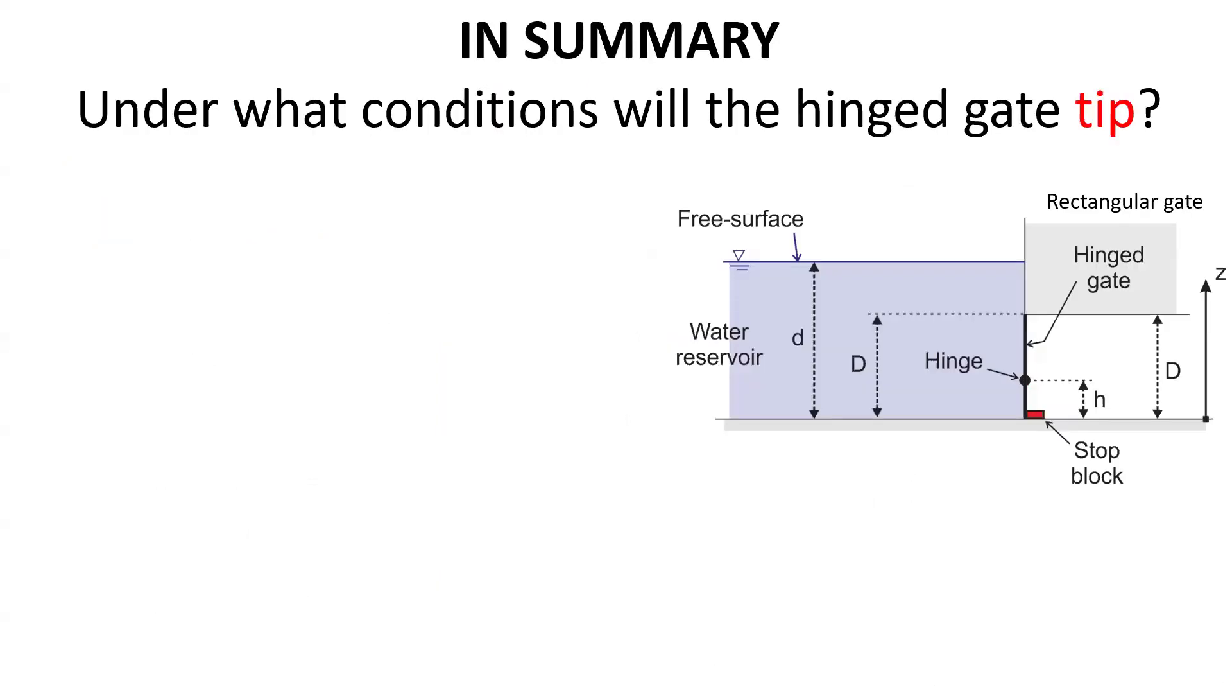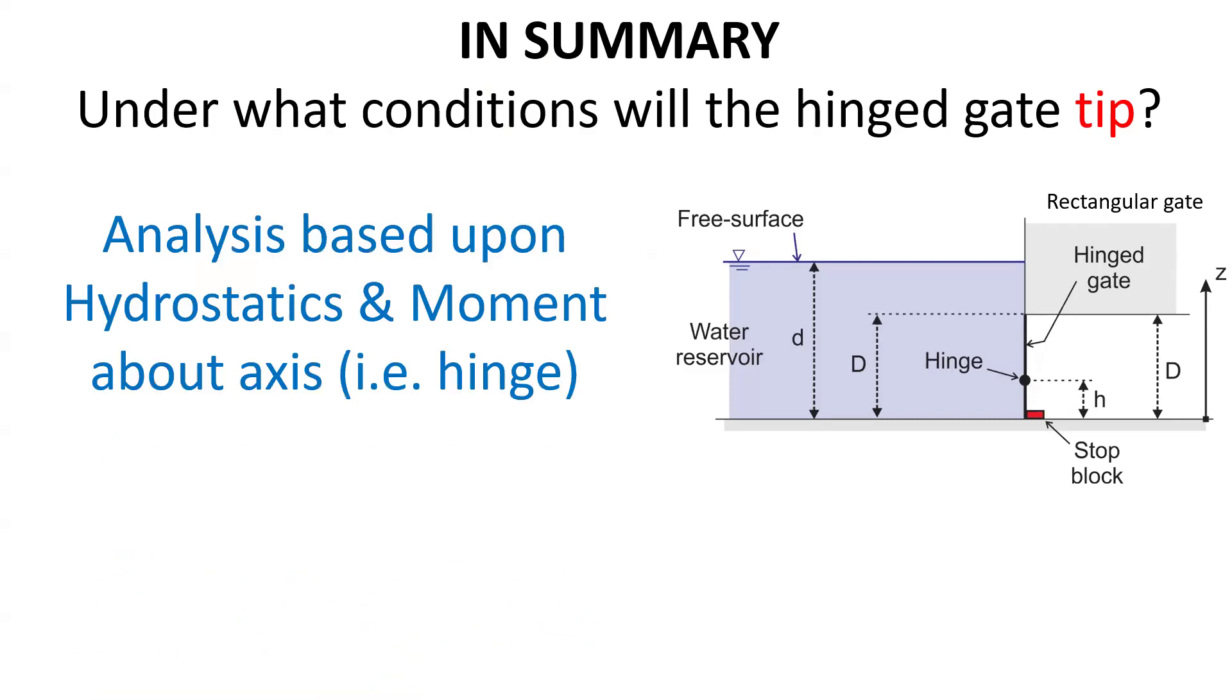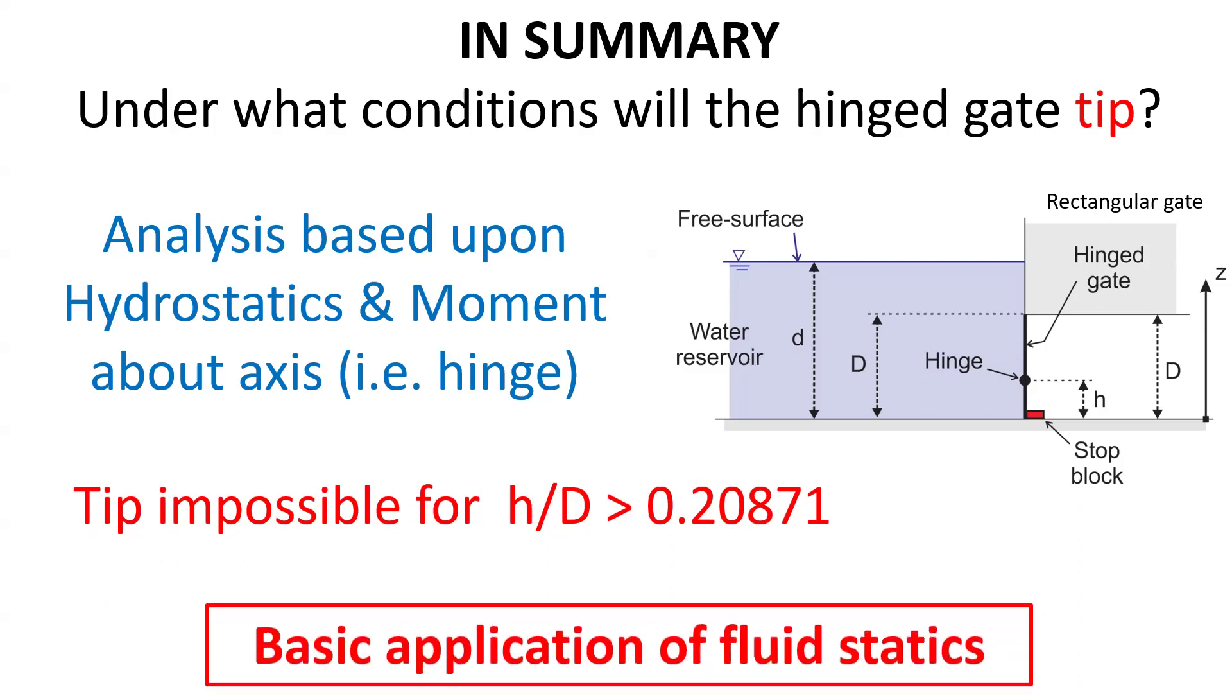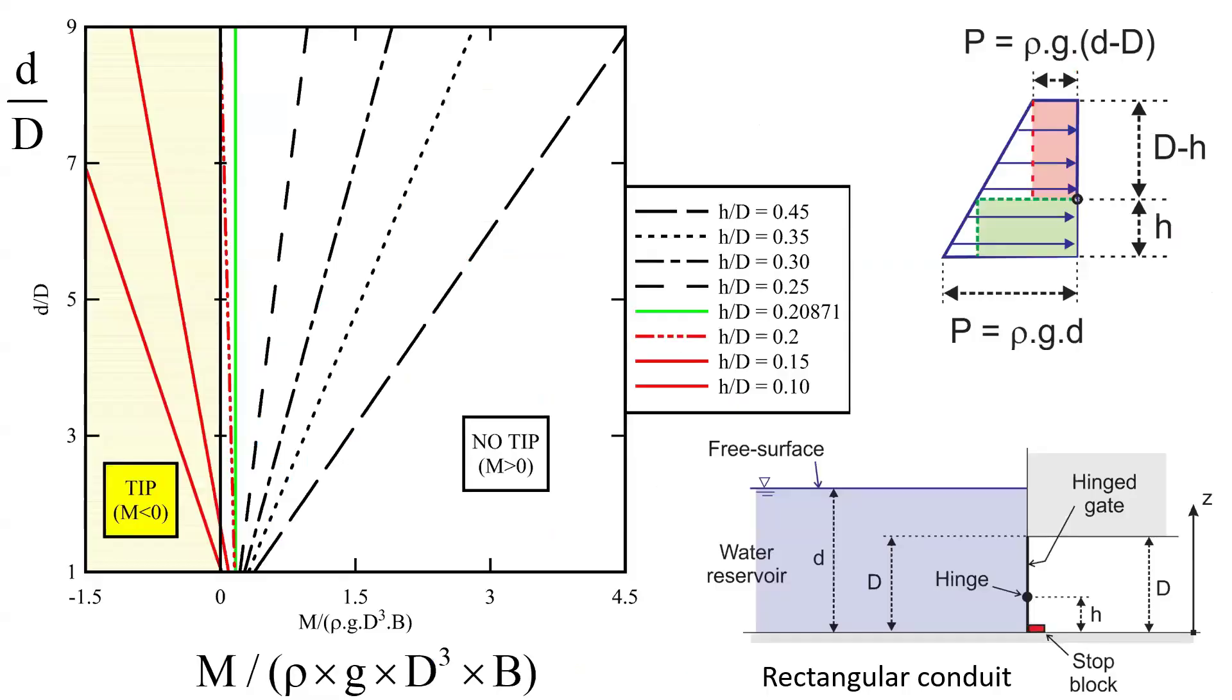In summary, under what condition will the hinge gate tip? This problem can be solved by applying hydrostatic angular momentum, showing in particular that tip is impossible when the relative hinge height is above 21%. All in all, this particular exercise is a very basic fundamental application of fluid statics with the complete result illustrated here on this slide.